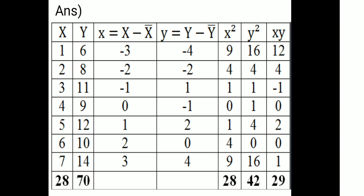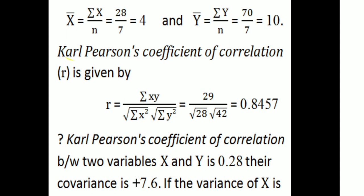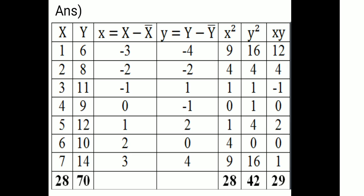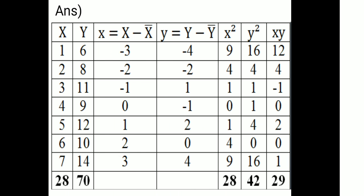We then calculate small x-squared, small y-squared, and small xy columns. The summation of x-squared is 28, summation of y-squared is 42, and summation of xy gives us the values needed. Then Karl Pearson's coefficient of correlation R equals summation xy divided by the square root of summation x-squared into summation y-squared, which equals the result divided by the square root of 28 into 42.